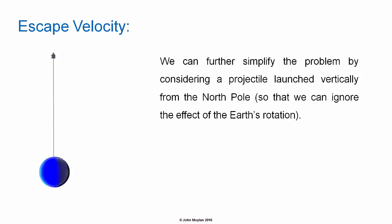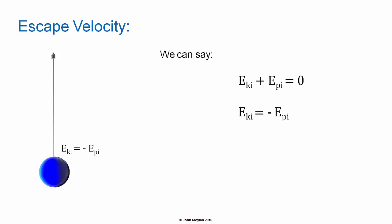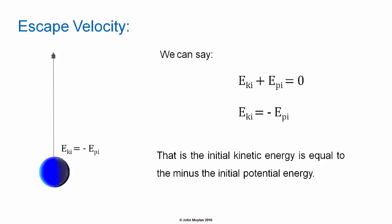We can further simplify the problem by considering the projectile launched vertically from the North Pole, which means we can ignore the effect of the Earth's rotation. We can say that E subscript Ki plus E subscript Pi, the sum of the initial kinetic and potential energy, is zero. We can rearrange this as E subscript Ki equals minus E subscript Pi — that is, the initial kinetic energy is equal to minus the initial potential energy.